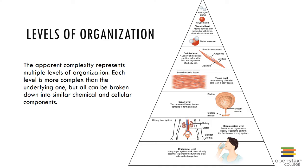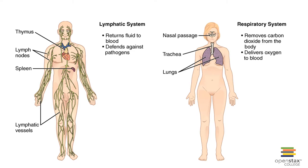Here are examples of organ systems we will study in Anatomy 1 and Anatomy 2. The lymphatic system is composed of lymph nodes, spleen, thymus gland, bone marrow, and tonsils. It houses immune system cells, provides protection against infection and disease, transports tissue fluid called lymph, and absorbs fats.